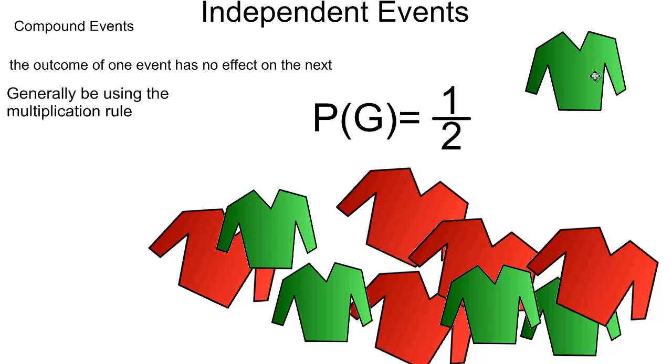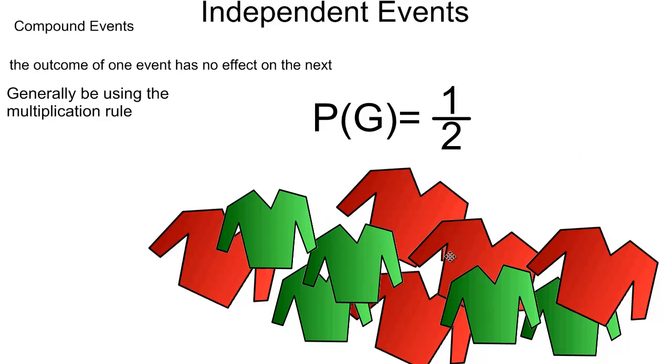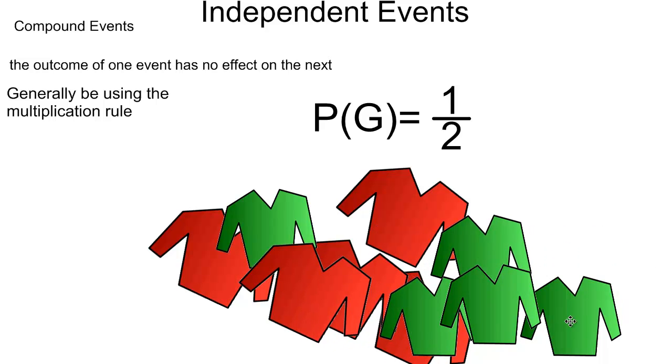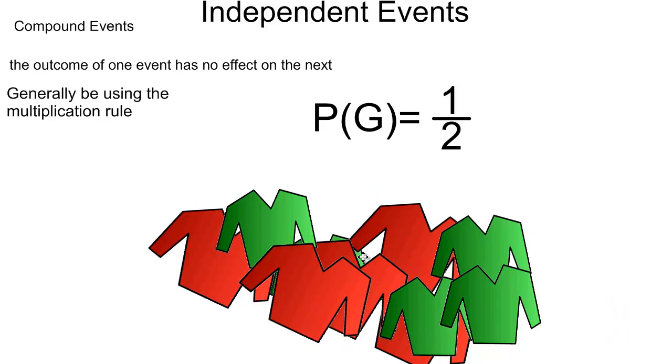Now these are independent events, so I have to put this green one back and then just randomly look away—as you can see, I'm looking away, I'm not watching what's happening—and I reorder it so that everything is random. This is known as selection with replacement.